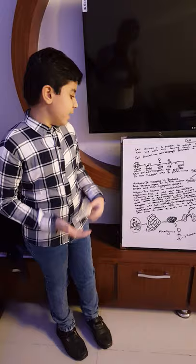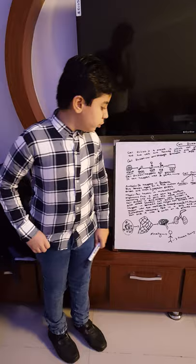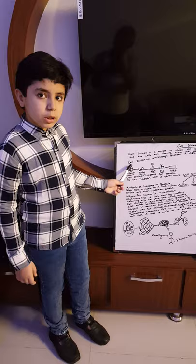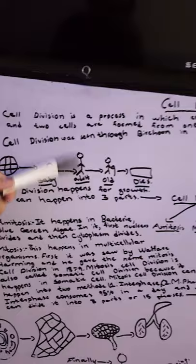When all organ systems work together, an organism is formed. From a single cell through cell division, a baby is formed. From baby, an adult is formed; from adult, an old person is formed; and then the organism dies.